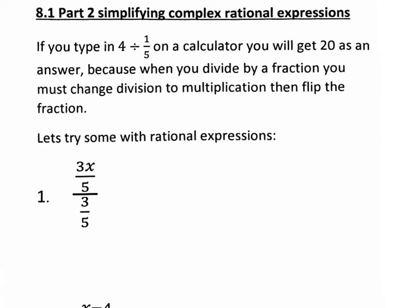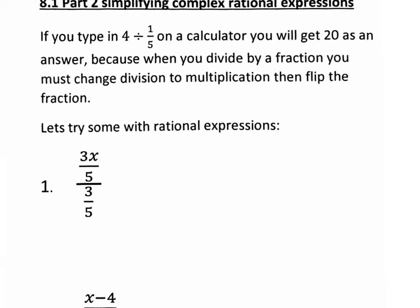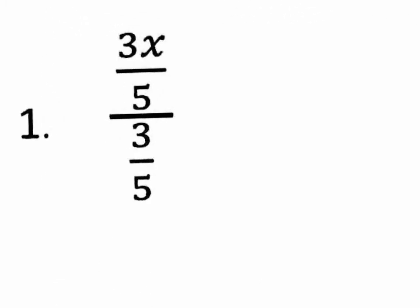But it's as simple as this: if you know that when we divide by a fraction, you change it to multiplication and flip the second fraction, it's cake. If you typed in on your calculator 4 divided by 1 fifth and hit equal, the answer is 20. Because dividing by 1 fifth is really multiplying by 5 over 1. So 4 divided by 1 fifth is really 4 times 5. With that concept, we're going to be able to simplify these very easily.